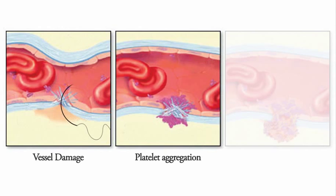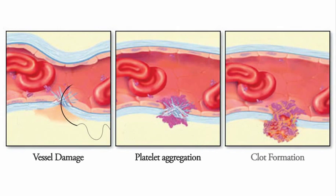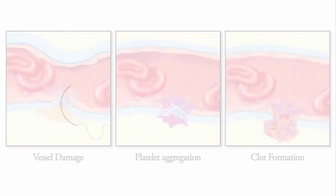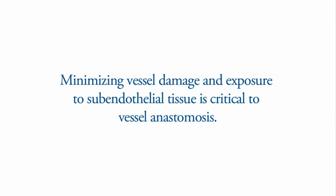While a small degree of platelet exposure to subendothelial collagen promotes platelet aggregation, excessive exposure may lead to excessive platelet deposition and the unintended production of a thrombus. Minimizing vessel damage and exposure to subendothelial tissue is critical to vessel anastomosis,